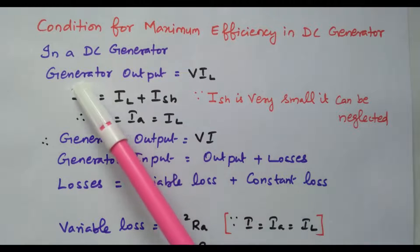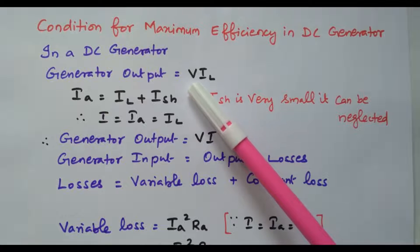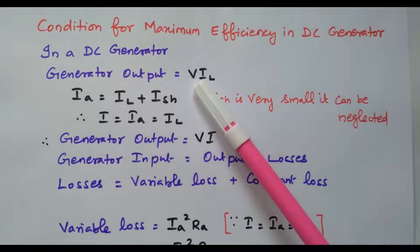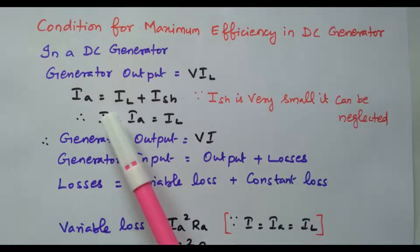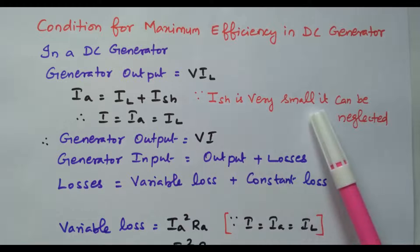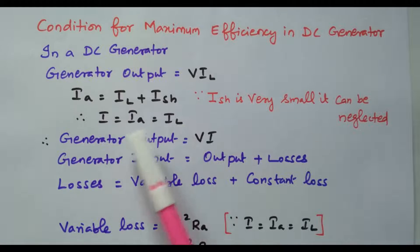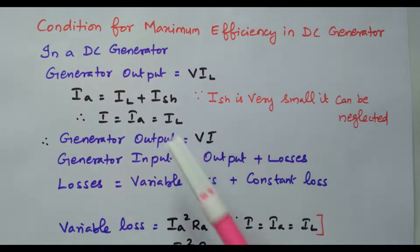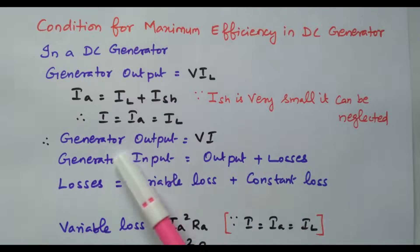The output of a DC generator is V into IL — the load current. V is the terminal voltage available outside after the losses. We know that armature current equals load current plus shunt current, but the shunt current is very small, so we assume armature current equals load current, both denoted as I. So the generated output equals V into I.